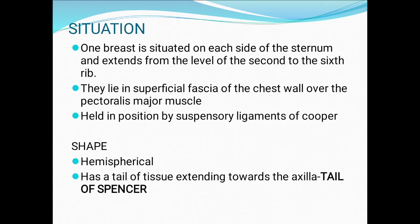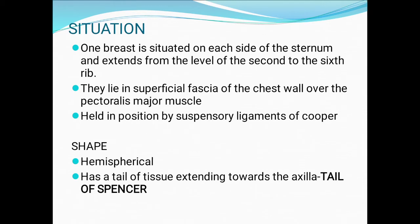Situation: one breast is situated on each side of the sternum and extends from the level of the second to the sixth rib. They lie in the superficial fascia of the chest wall over the pectoralis major muscles, held in position by the suspensory ligaments of Cooper. Shape: hemispherical, with a tail of tissue extending toward the axilla — the tail of Spence.